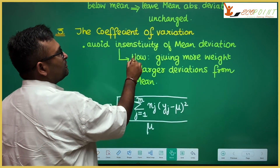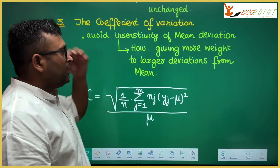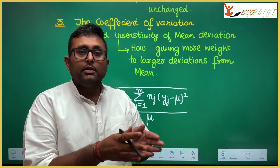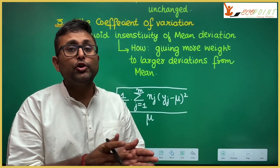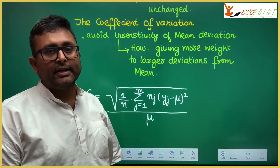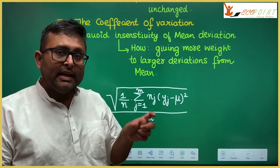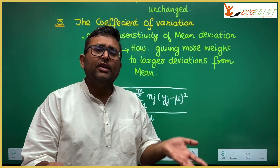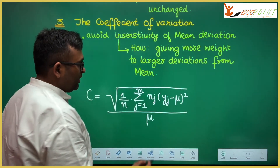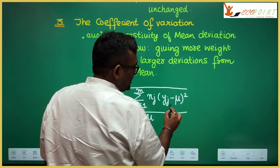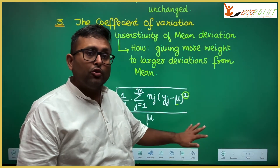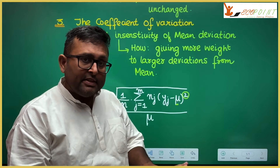A still better inequality measure is the coefficient of variation. The coefficient of variation has one advantage over mean absolute deviation: if the deviation of income from the mean income is higher, it gives larger weight to that. This solves the insensitivity problem of mean absolute deviation, where equal weight was given regardless of how far or near an income is from the mean. By squaring the deviation, larger deviations get higher weight.